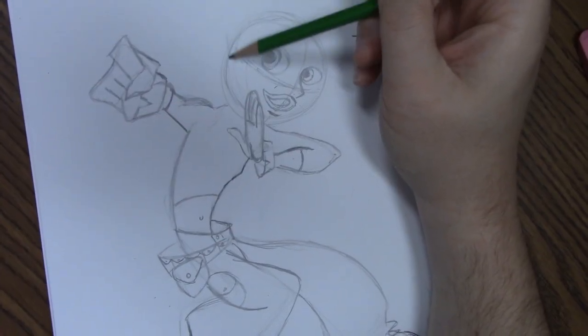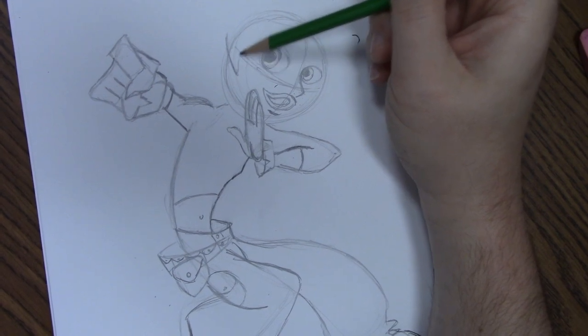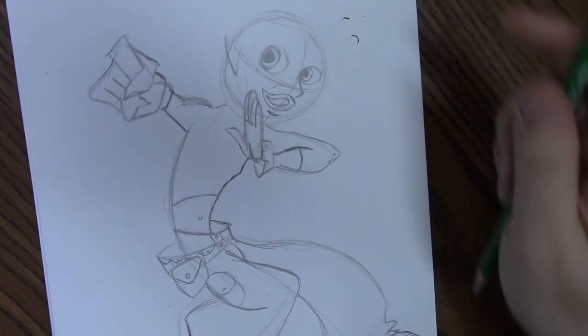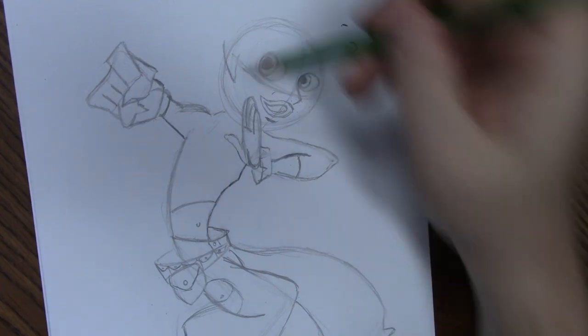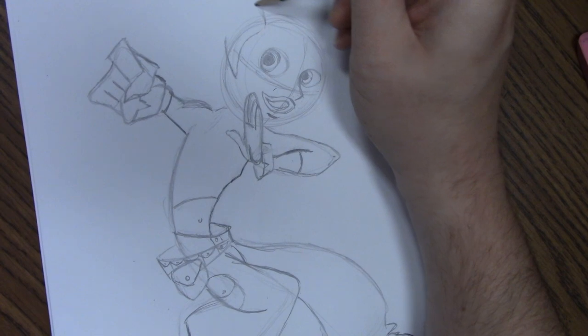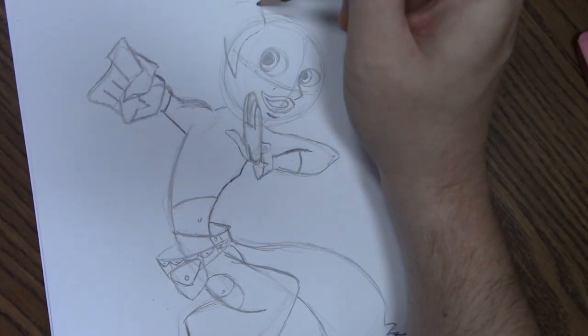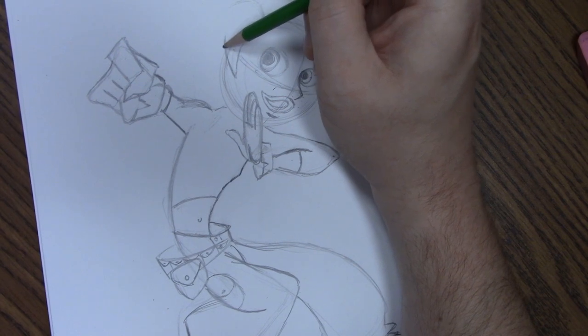Her ear is going to be tucked behind this bit of hair that's going to be turning in, creating a part. Now her part is going to be right here and then all her hair is going to be behind her head. Actually before we do that, let's draw in this ear. We're only seeing one ear and all of her hair is going to be behind her.